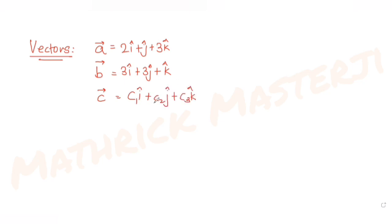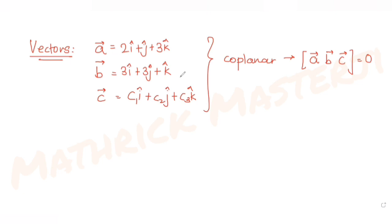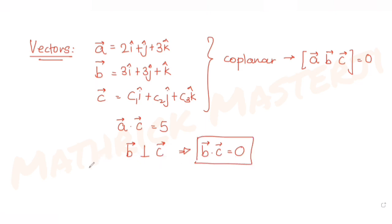These three vectors are coplanar, which means their scalar triple product (box product) equals zero. Further, vector a · vector c = 5, and vector b is perpendicular to vector c, so b · c = 0, because if two vectors are perpendicular their dot product is zero. The question asks us to find the value of 122 times (c1 + c2 + c3).